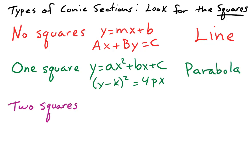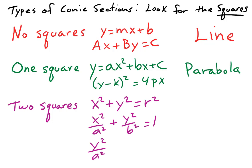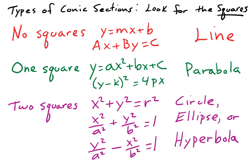If the equation has squares on both x and y, then the graph is a circle, an ellipse, or a hyperbola. A circle can be considered a special case of an ellipse, in the same way that a square is a special case of a rectangle. We come back to this idea when we consider the eccentricity of an ellipse.